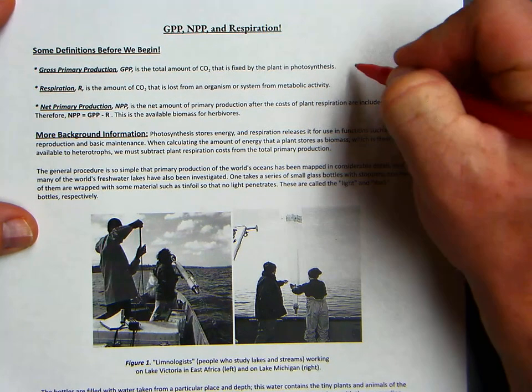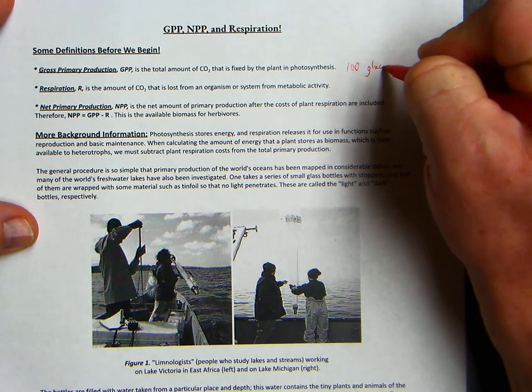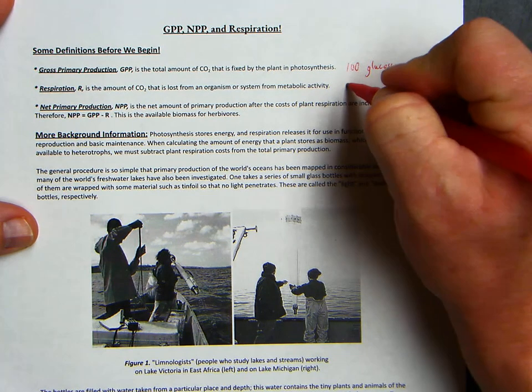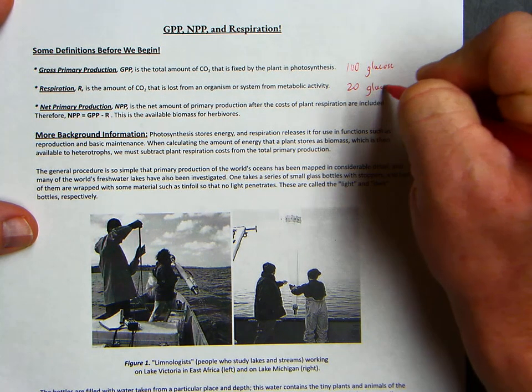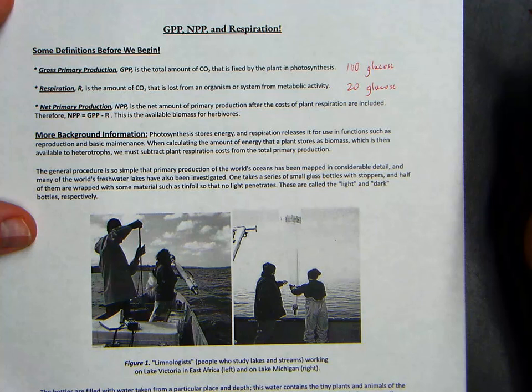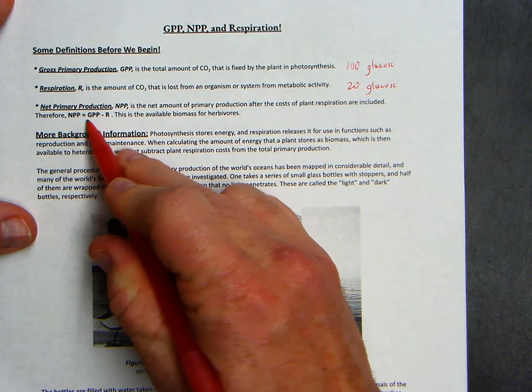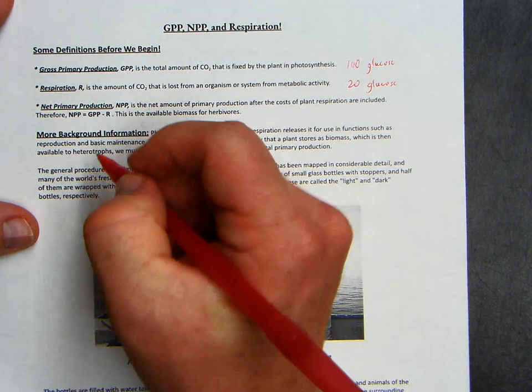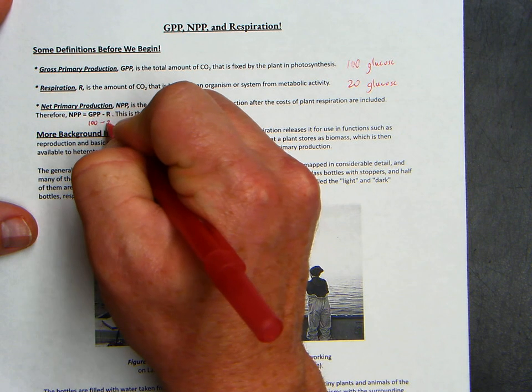So like I said in the video, let's say that they make 100 molecules of glucose. It costs the plant 20 glucose molecules to stay alive. So if I take this formula, NPP equals GPP minus R, I would just kind of plug and play with the numbers.